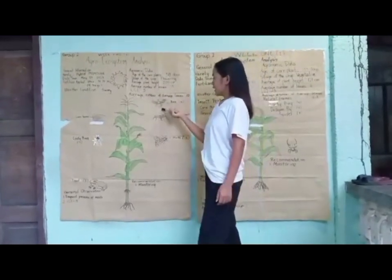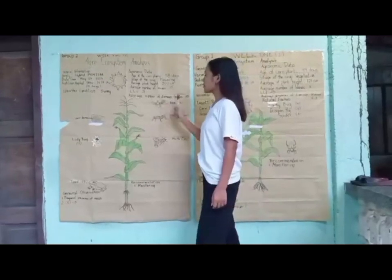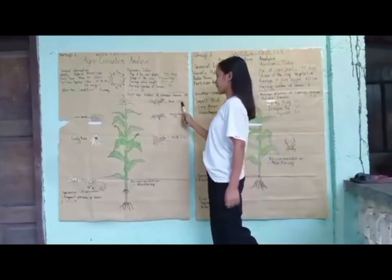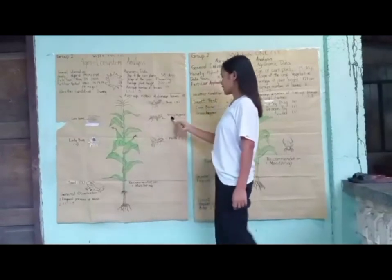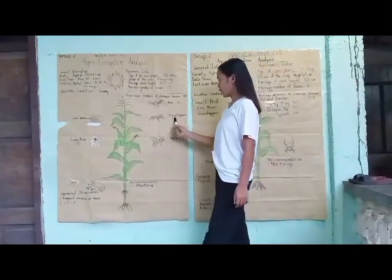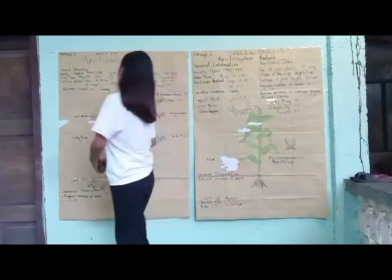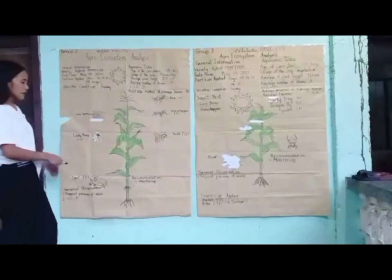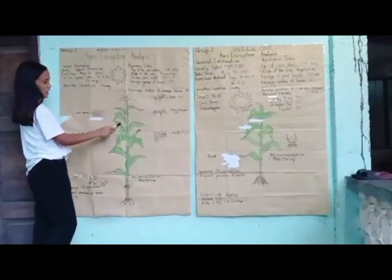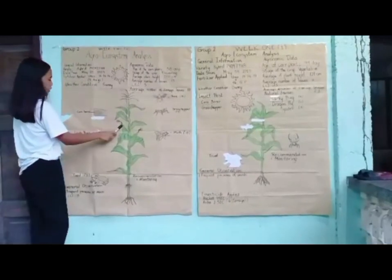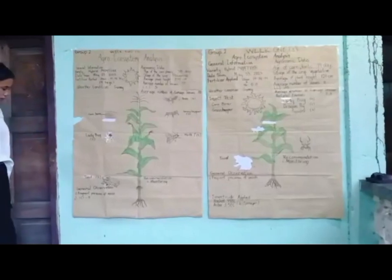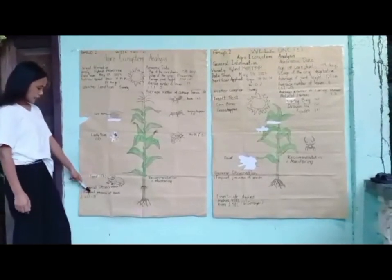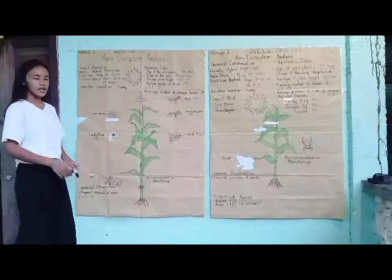The natural enemies observed out of 10 crops: bee — 5; ladybug — 7. Pests: grasshopper — 7; moth — 13; corn borer present in all crops, observed in the corn stalks and leaves. Toad — 3. The general observation is frequent presence of weeds. The LCI is 5. The recommendation is monitoring.